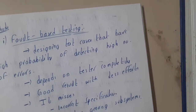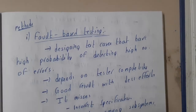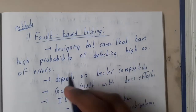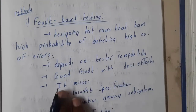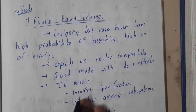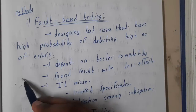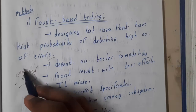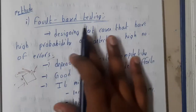The first method is fault based testing. Here we design test cases that have a high probability of detecting a higher number of errors, depending on the tester. It gives good results with less effort. It minimizes incorrect specifications and interactions among subsystems. So in fault based testing, we give test cases and expect a high probability of finding or detecting an error.